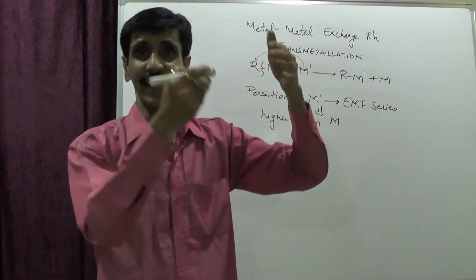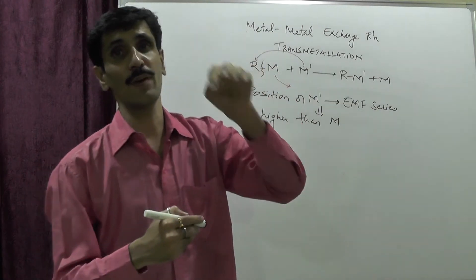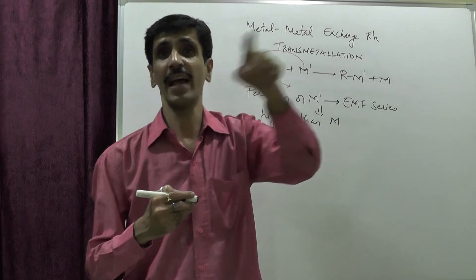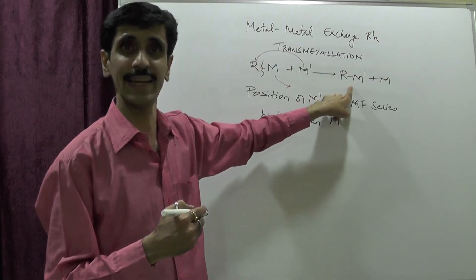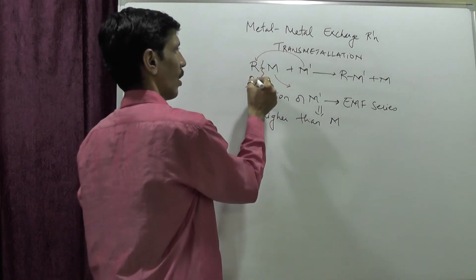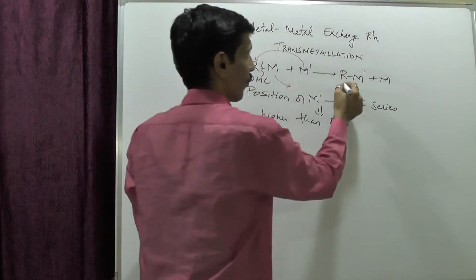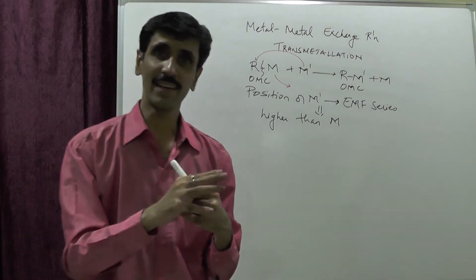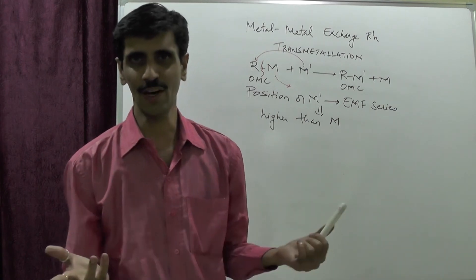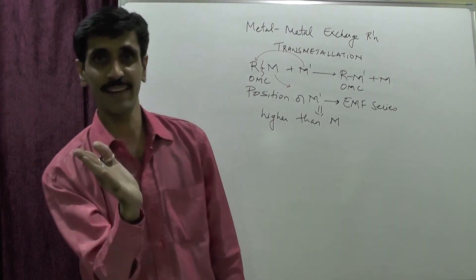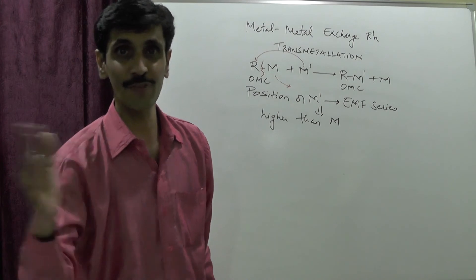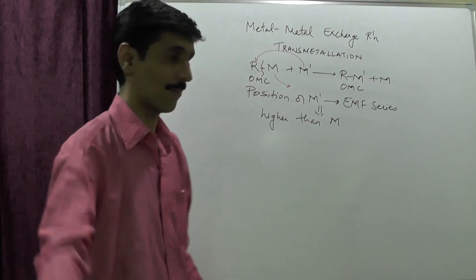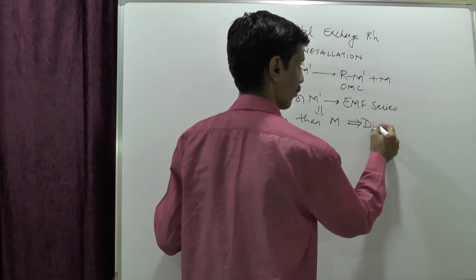Because M' has greater energy and greater reactivity compared to M, it is able to break the R–M bond, knock off M, and take its position, yielding a new organometallic compound R-M'. By analogy, we can also call this a displacement reaction — a stronger M' displaces the weaker M, just as a mightier person displaces a weaker one.